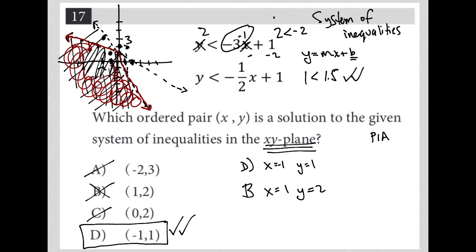So in essence, if you plugged in each of these for x and y for each of your options, A, B, and C would not work for at least one of the inequalities. But choice D would be the only answer that does work for both inequalities when you plug in the answers.